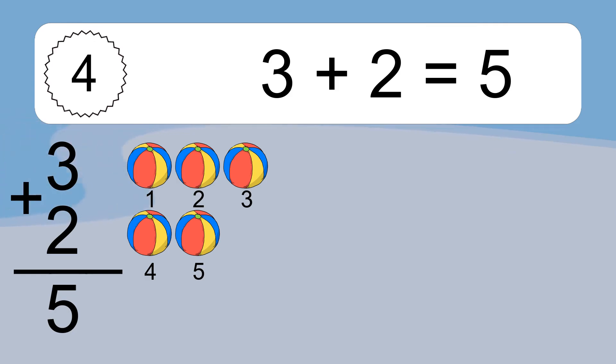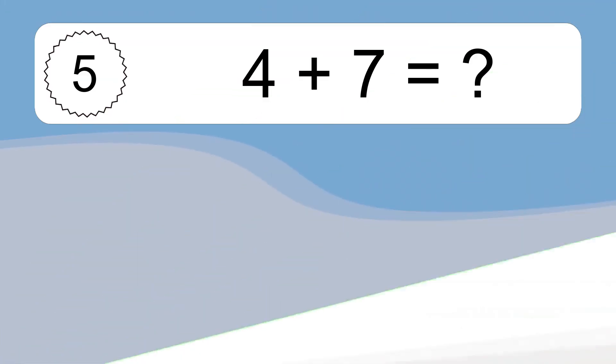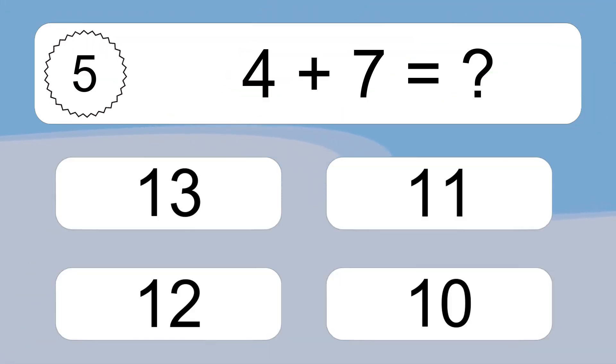Let's count it. 1, 2, 3, 4, 5. 4 plus 7 equals what?